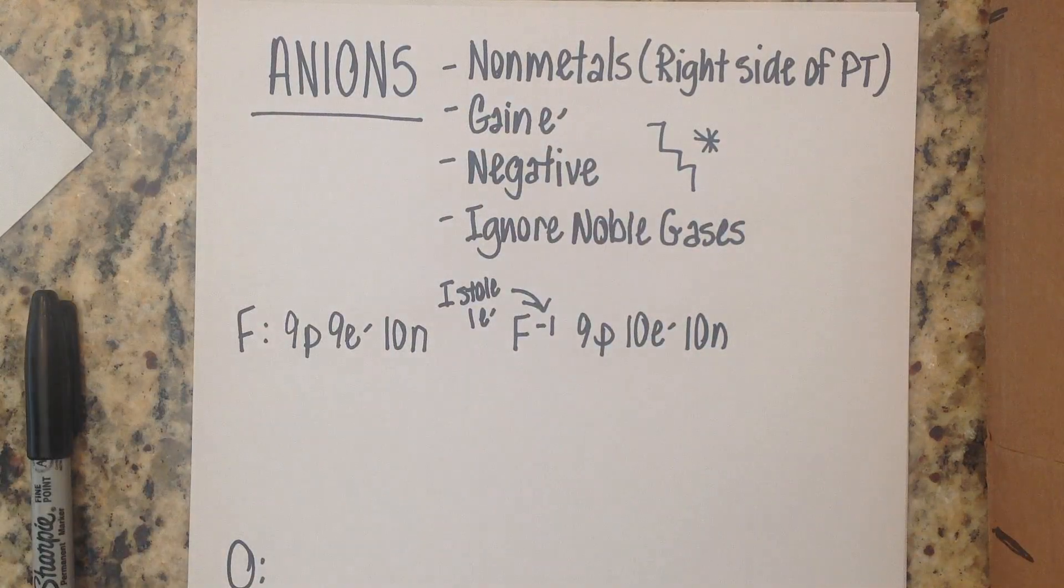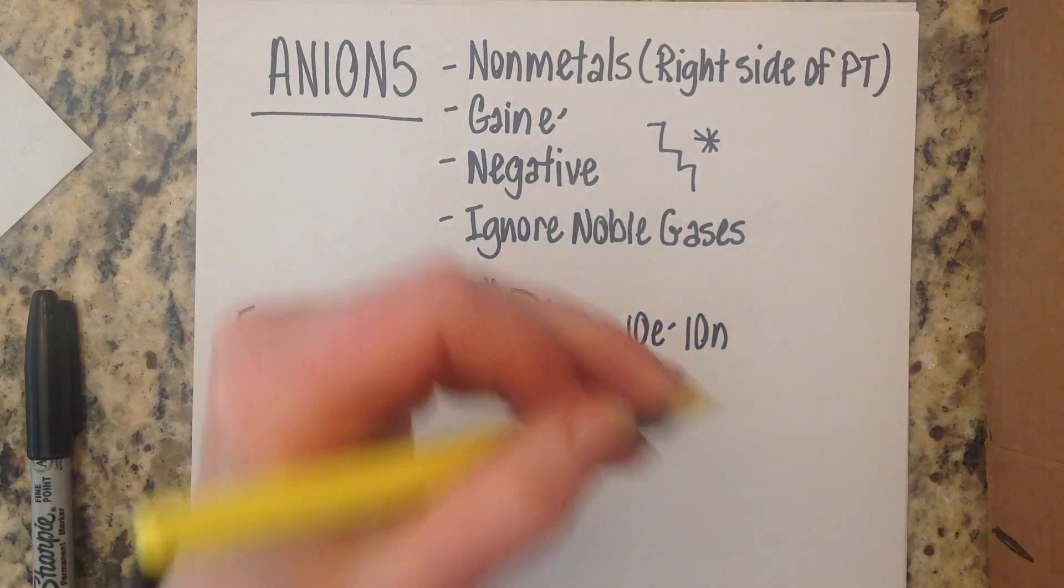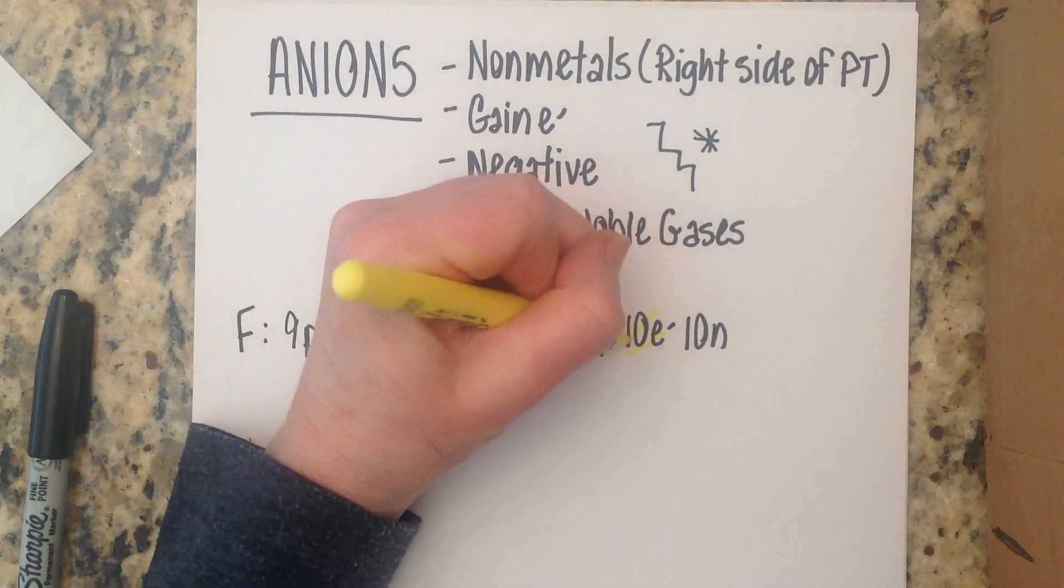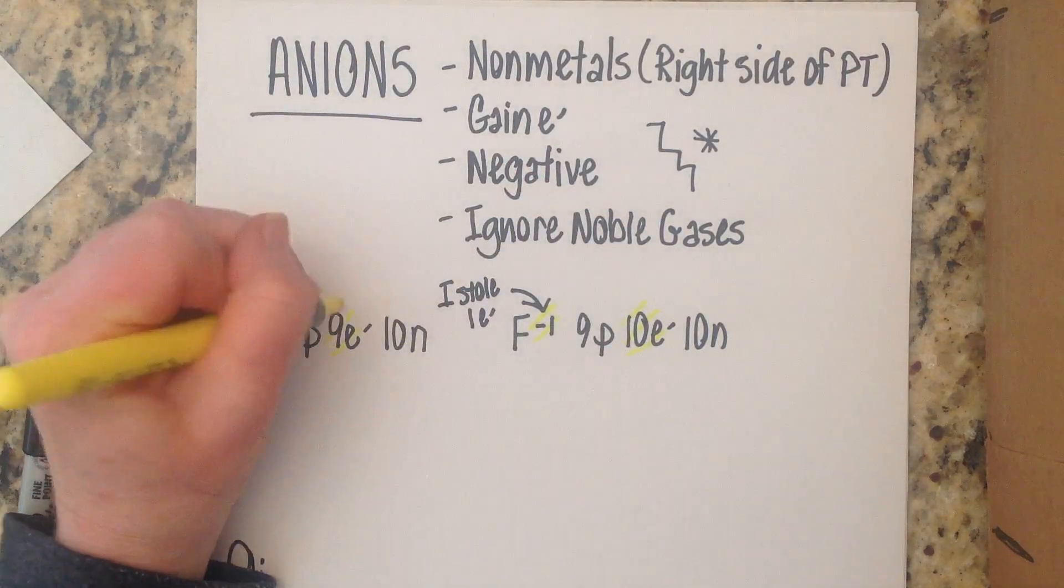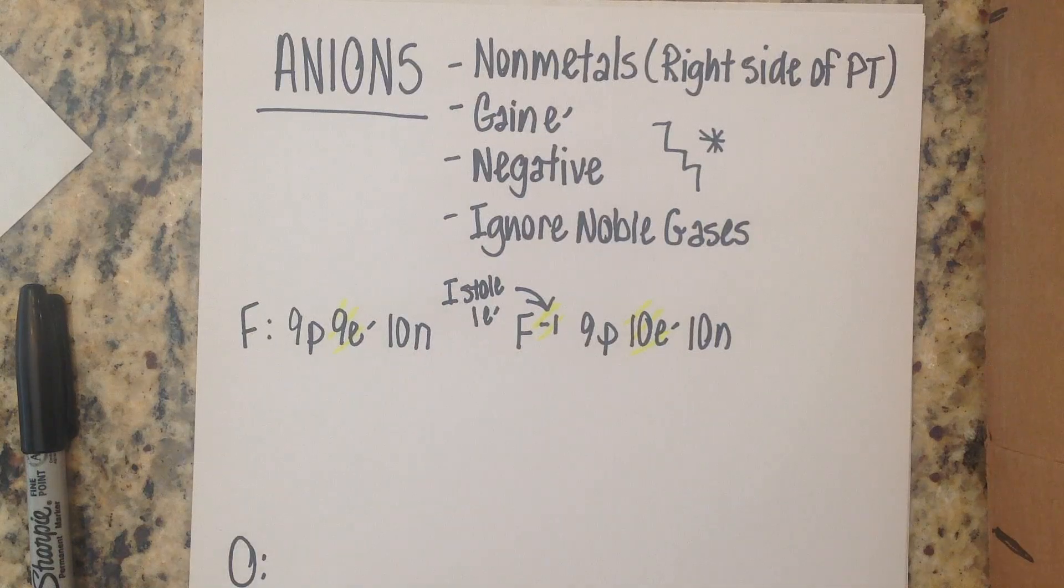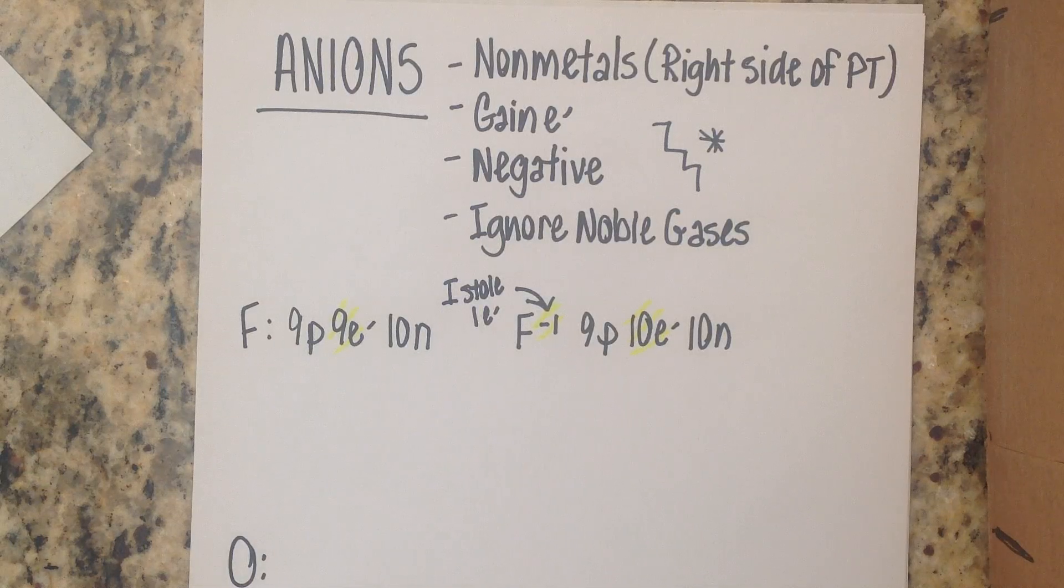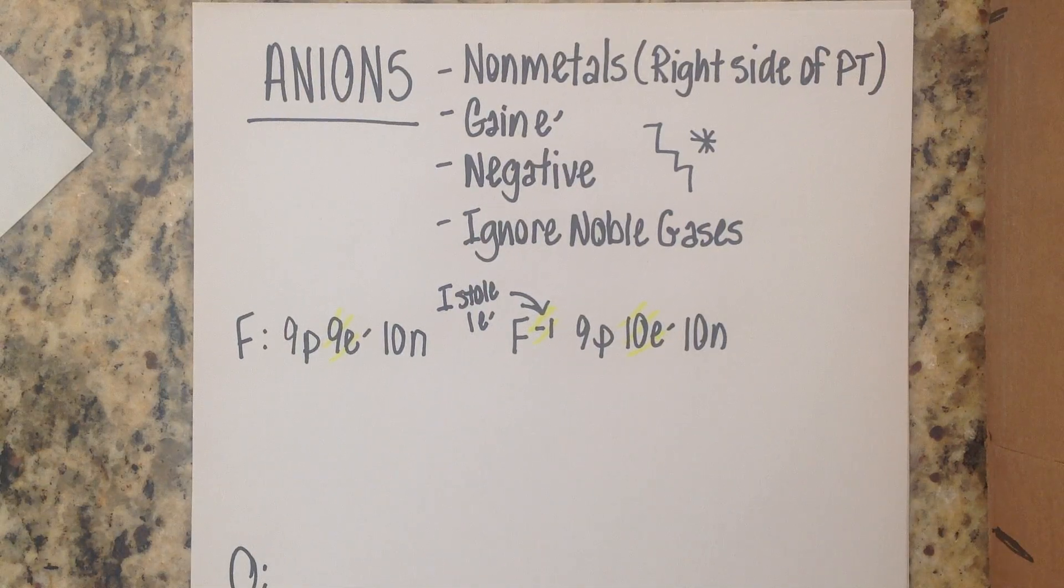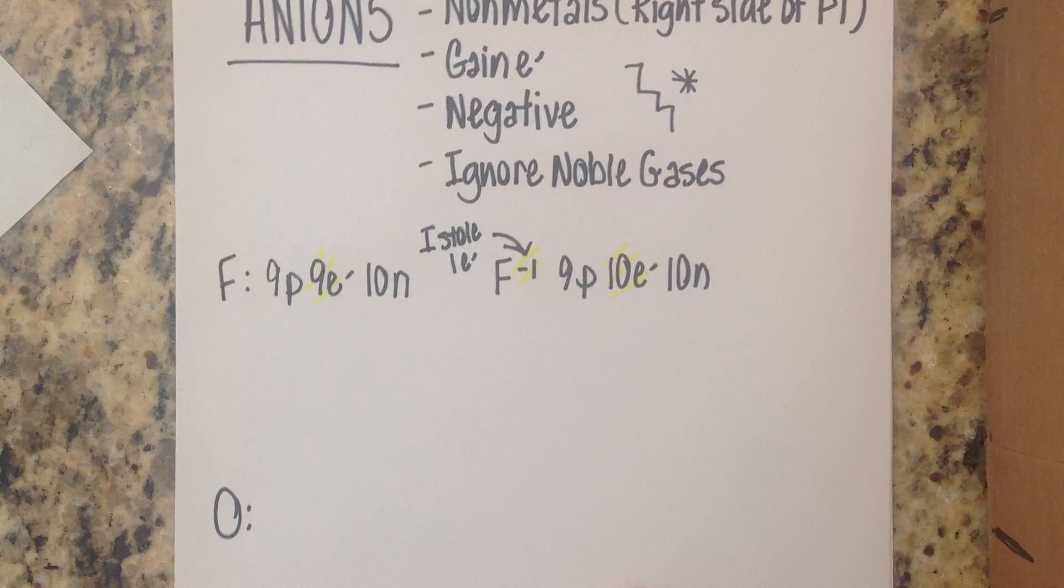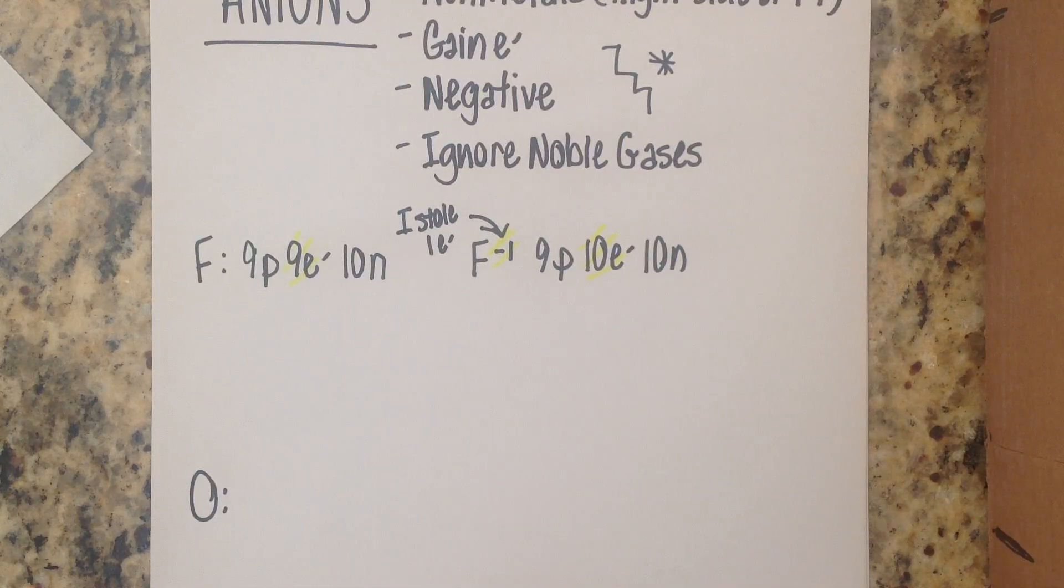So I always like to highlight this I think it's very important this negative one change this number of electrons again kind of do opposite of what the sign says that's just a little mind game for you. If the sign is negative if the charge is negative you're going to add that many electrons to your total. So now let's draw these two atoms and see what they look like.